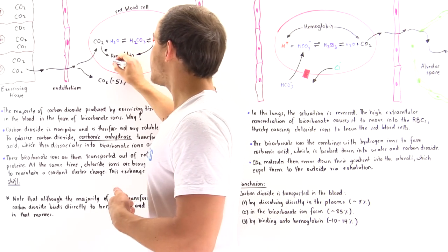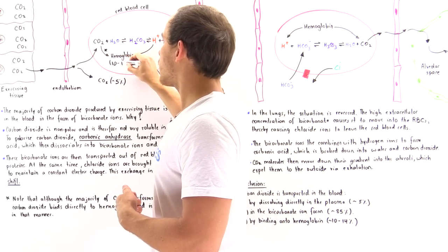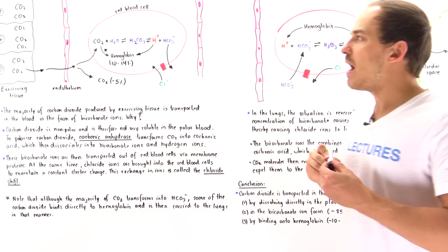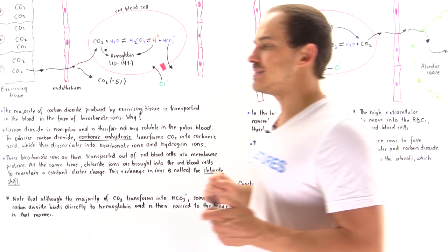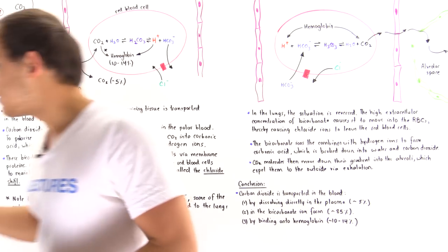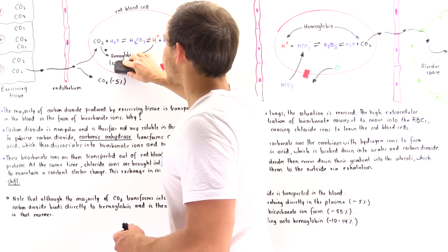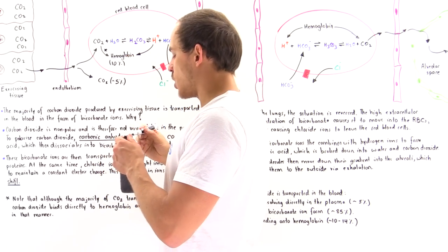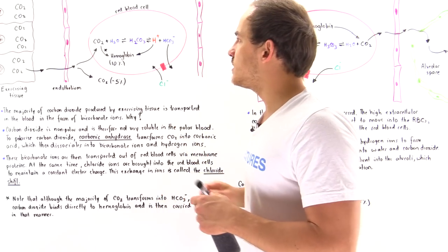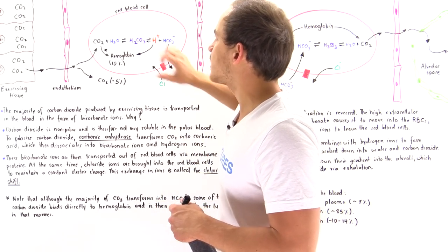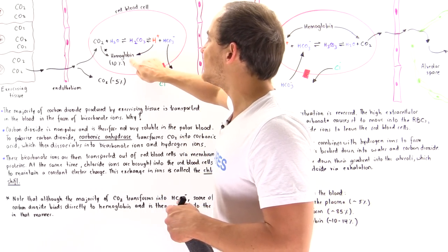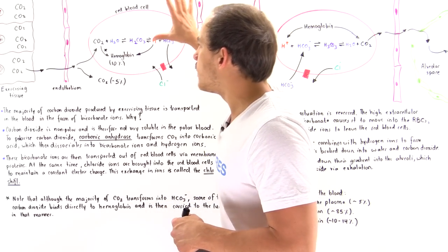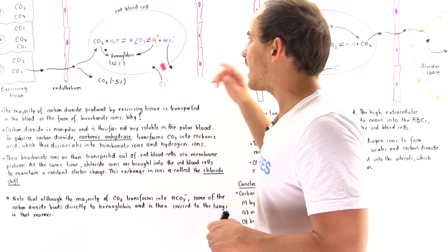About 10 to 14% of the CO2 molecules actually bind to hemoglobin. For simplicity, let's assume 10%, so about 10% of the CO2 molecules inside the red blood cell bind directly to hemoglobin and travel to the lungs bound to it.